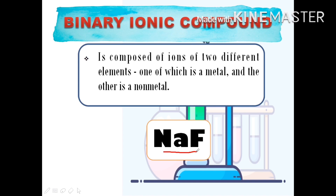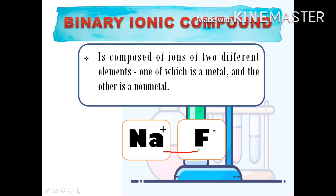NaF, or sodium fluoride, is an example of a binary ionic compound. It has two ions of different elements — sodium ion and fluorine ion — and one is a metal and the other is a non-metal. Sodium is our metal cation, and fluorine is our non-metal anion.